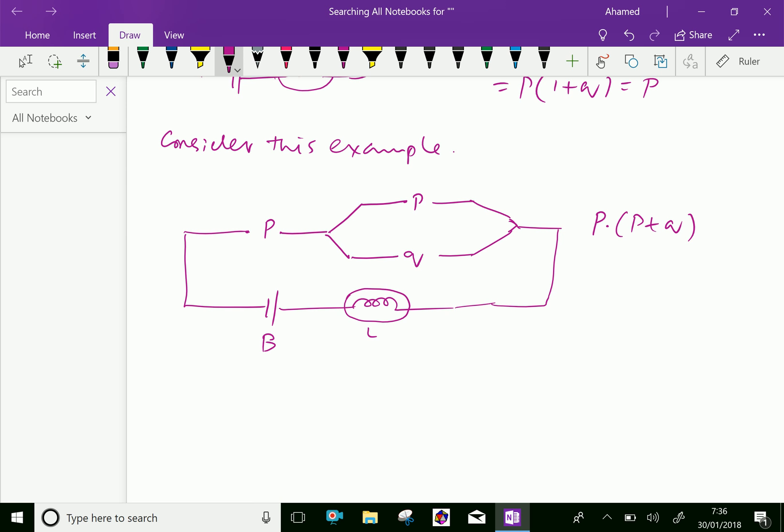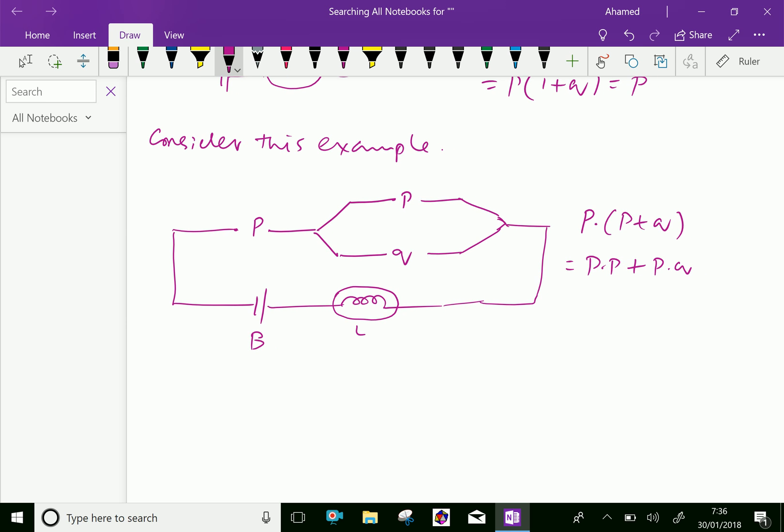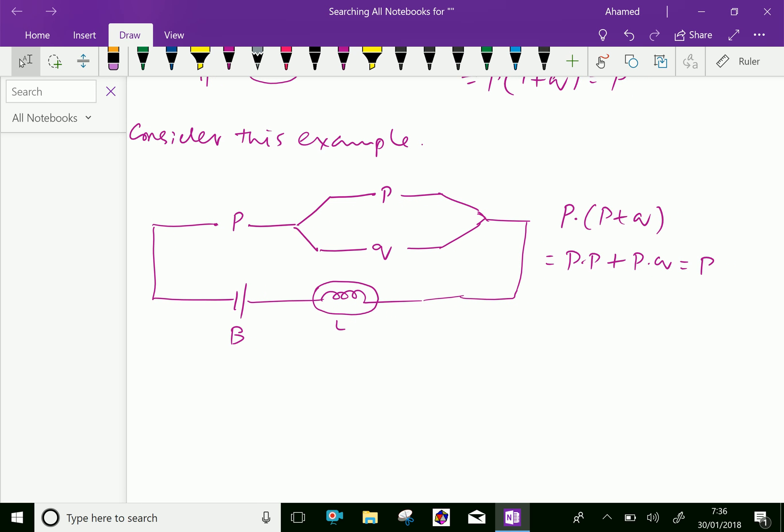Means here P plus Q means P or Q is closed, and P is closed, then the bulb will blow, which is further equal to P into P plus P dot Q, equal to P into P is P and P Q, that is 0, equal to P. Therefore the simplified circuit.